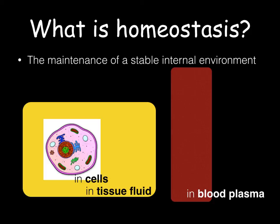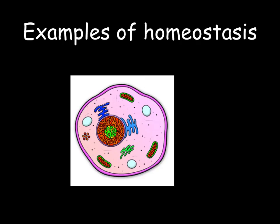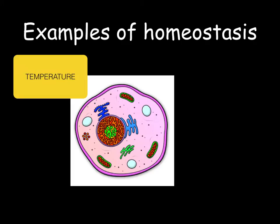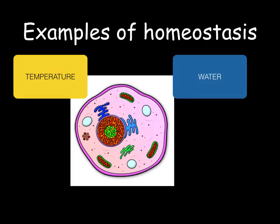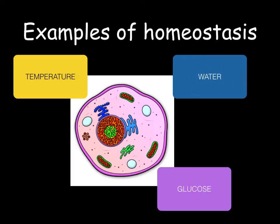Any changes that do occur will be readjusted so that they return to the set point. Examples of homeostasis include temperature, water, and glucose.